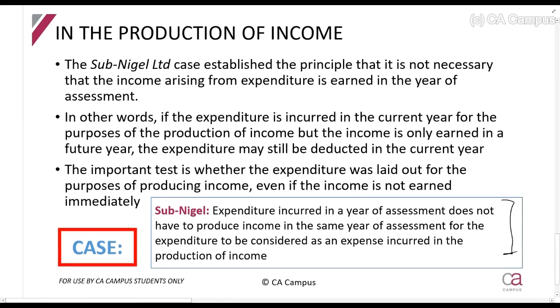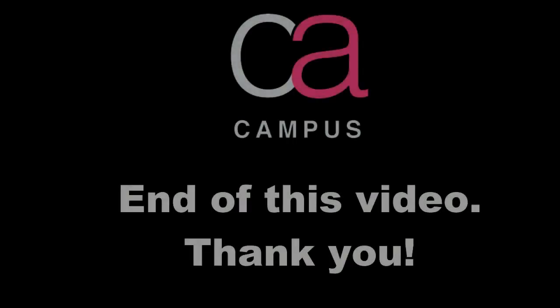The Sub-Nigel case says that if you incur expenditure in this year, but the income will only be earned in the future year, you can still claim it in this year. So for example, if I go and I buy a stack of invoices, and I only start using those invoices next year, when I sell things, I can still claim it now. So it doesn't have to be in the same year.